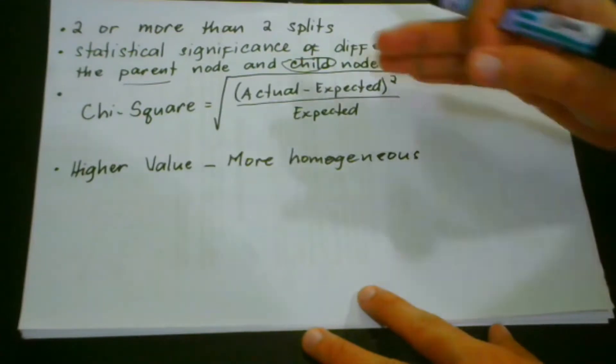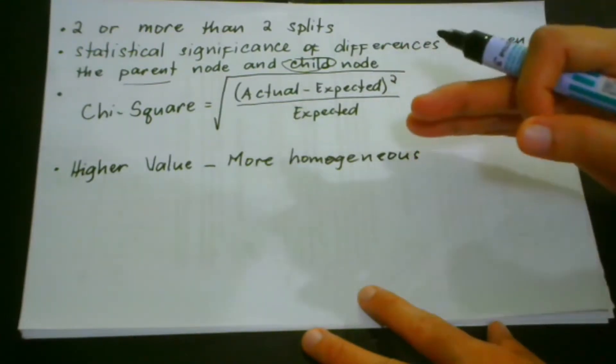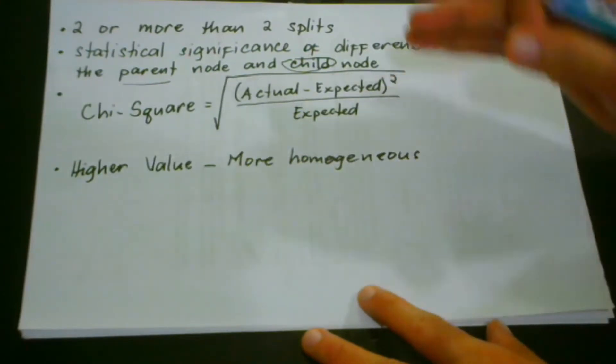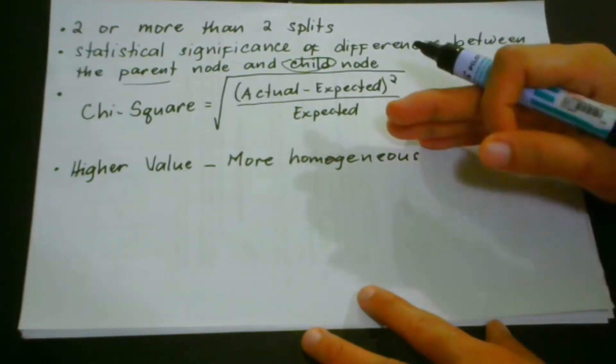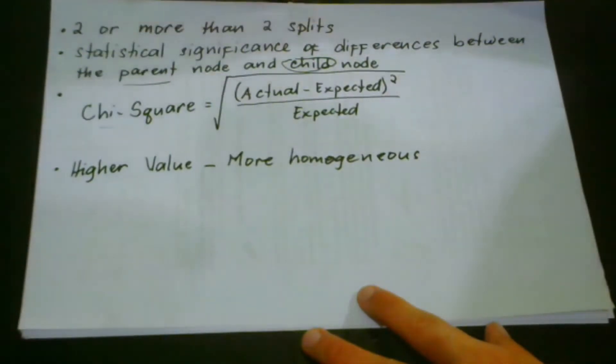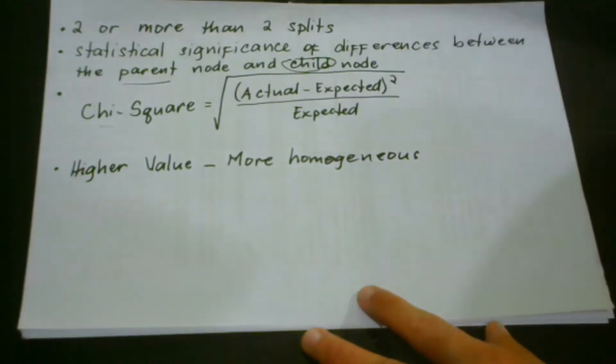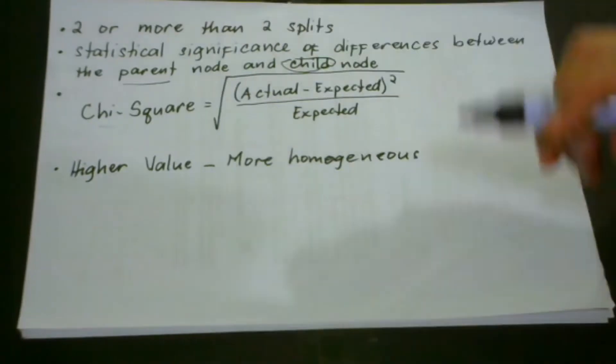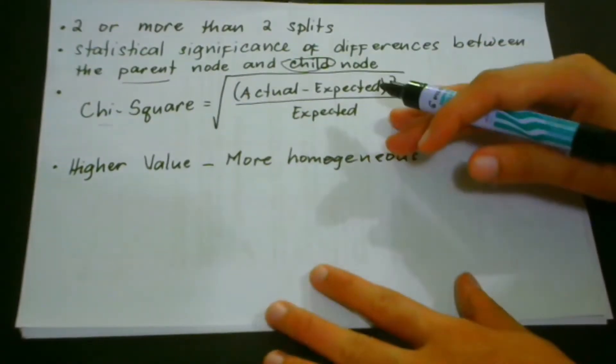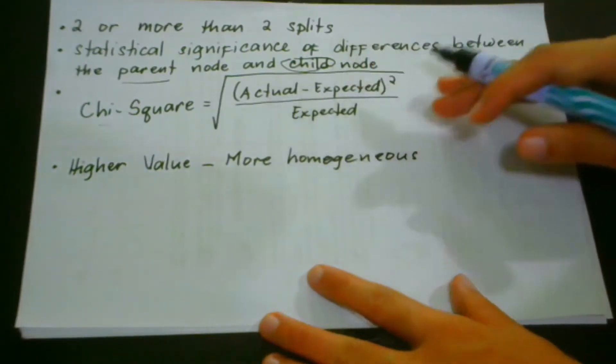So with this case, we're going to find another way to determine which split is the most effective and efficient to use in our data for a decision tree algorithm. Chi-square is very important in this situation because it can work on two or more than two splits. I have to remind you that this one also works for categorical target values.